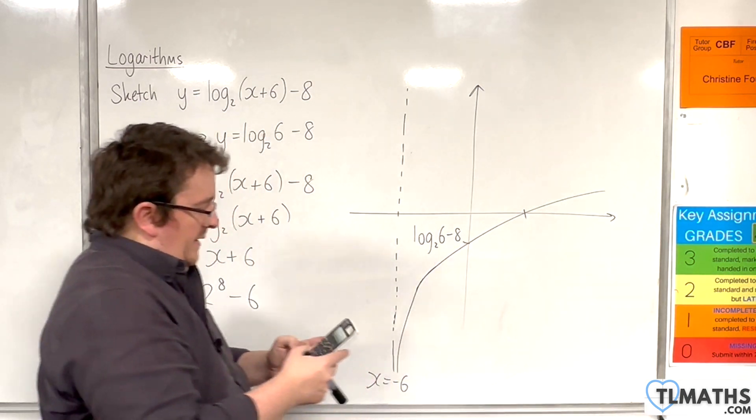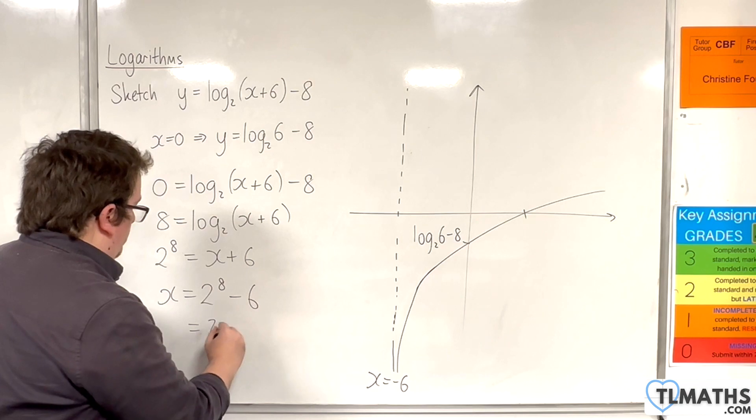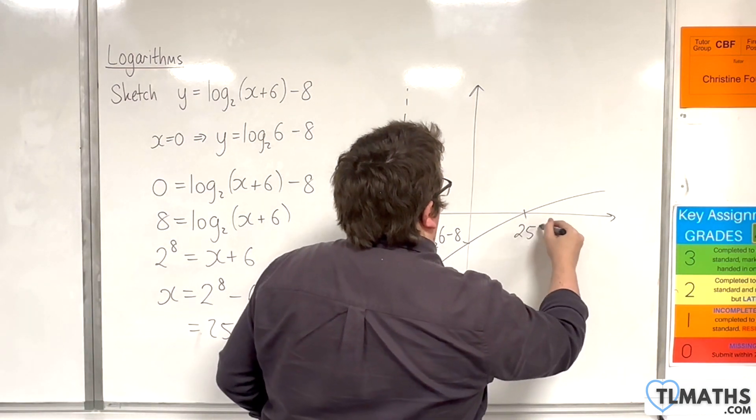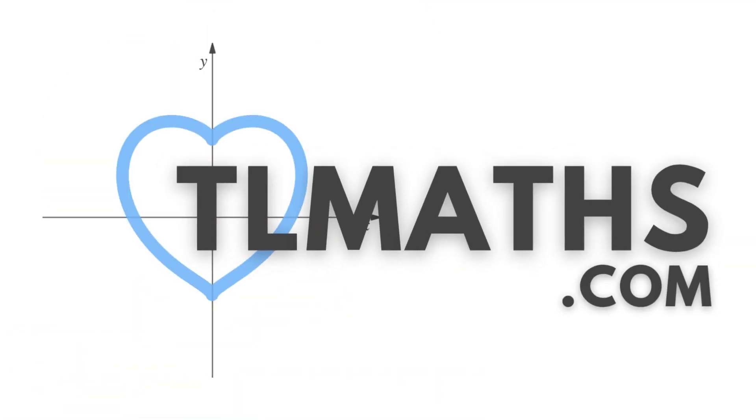So 2 to the 8, take away 6, is 250. So that is where the curve crosses the x-axis.